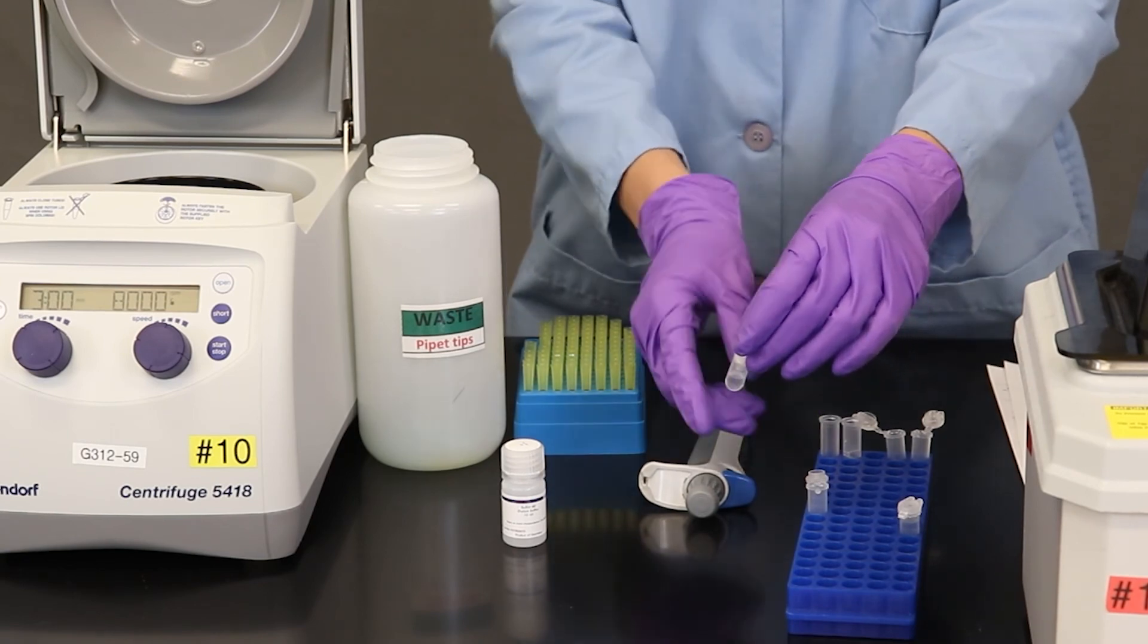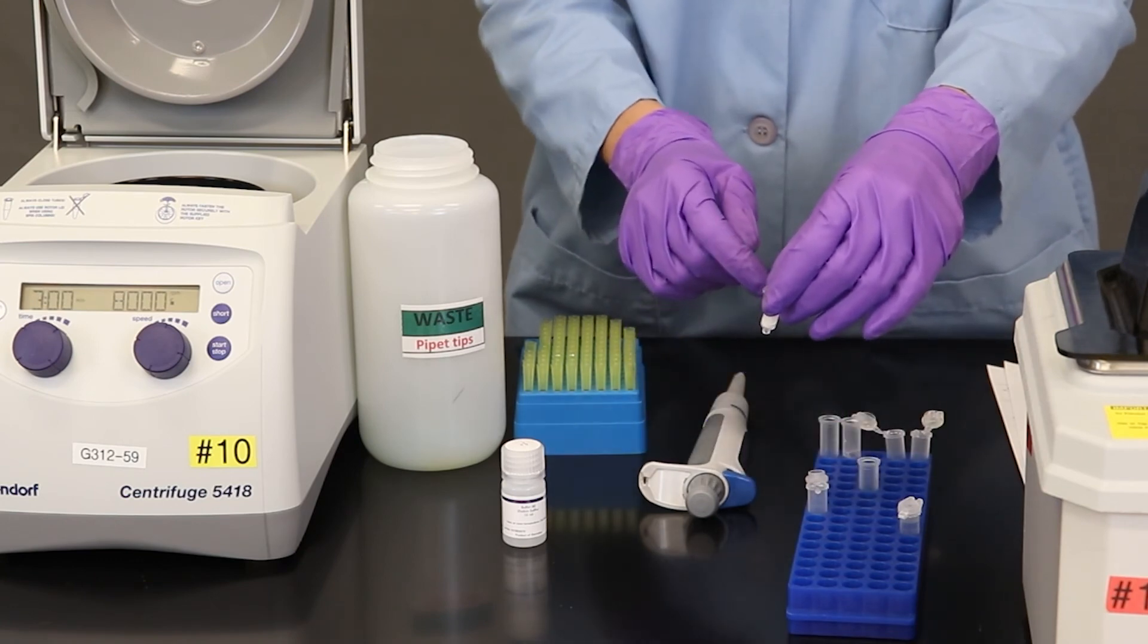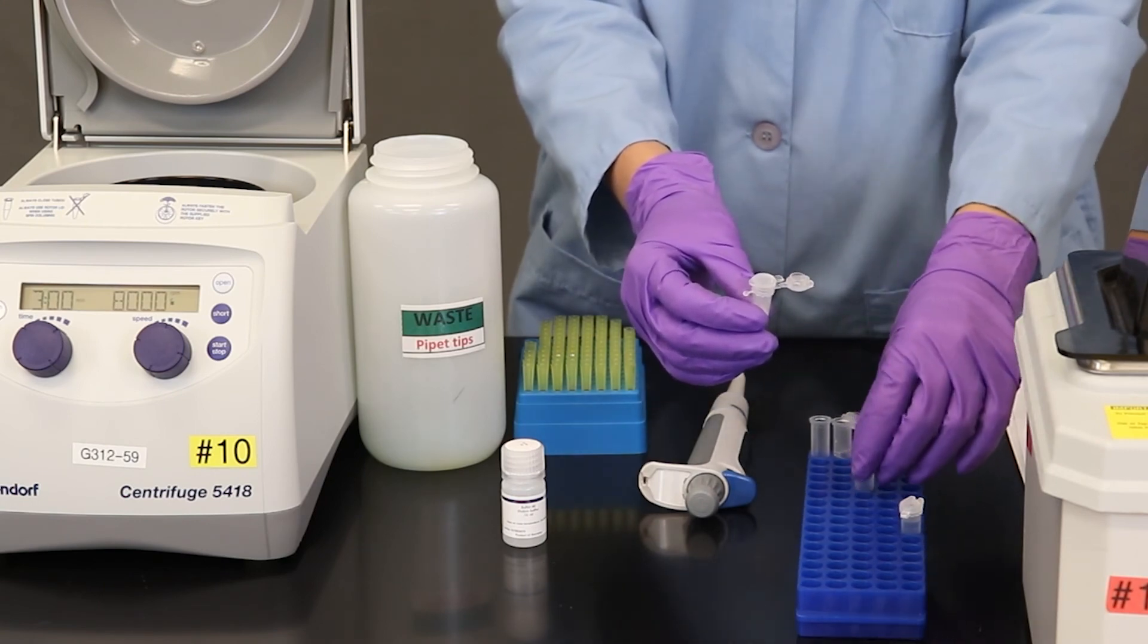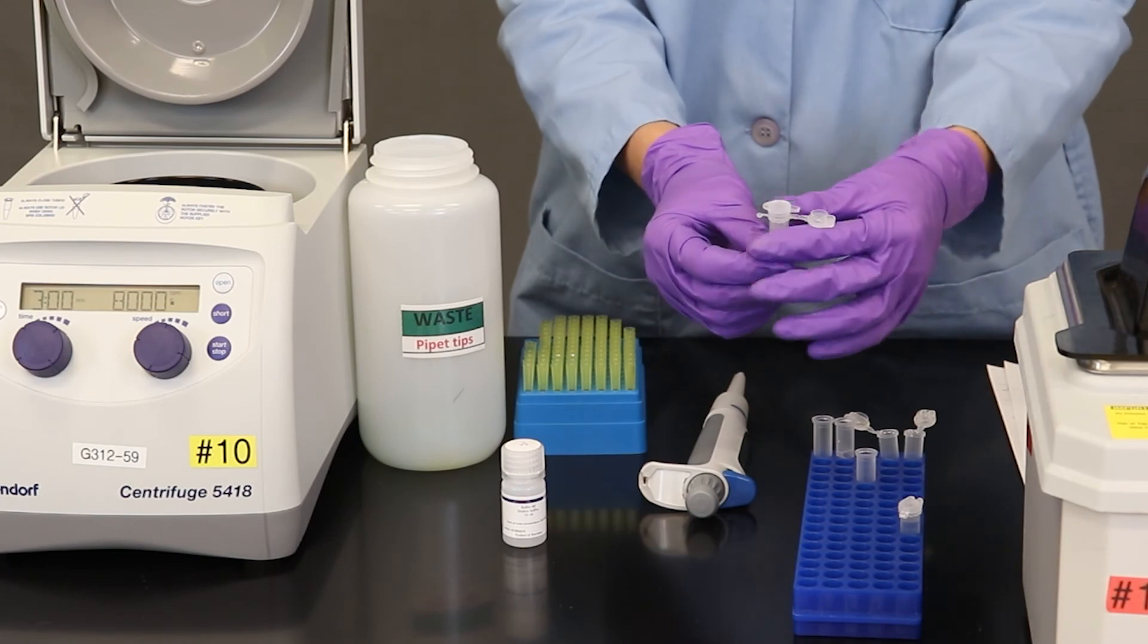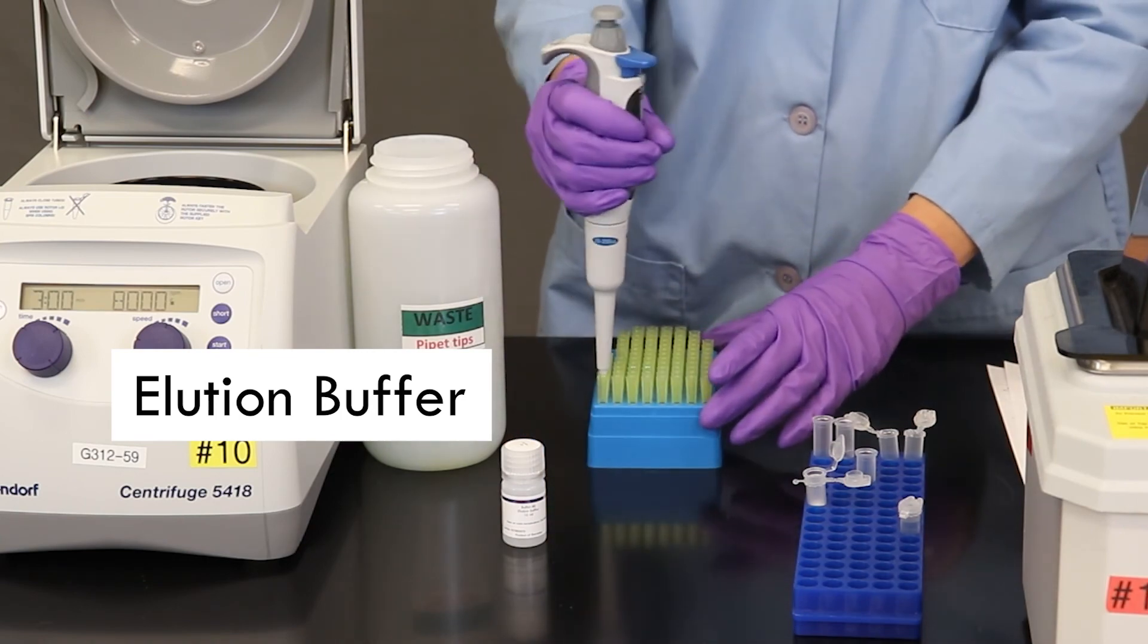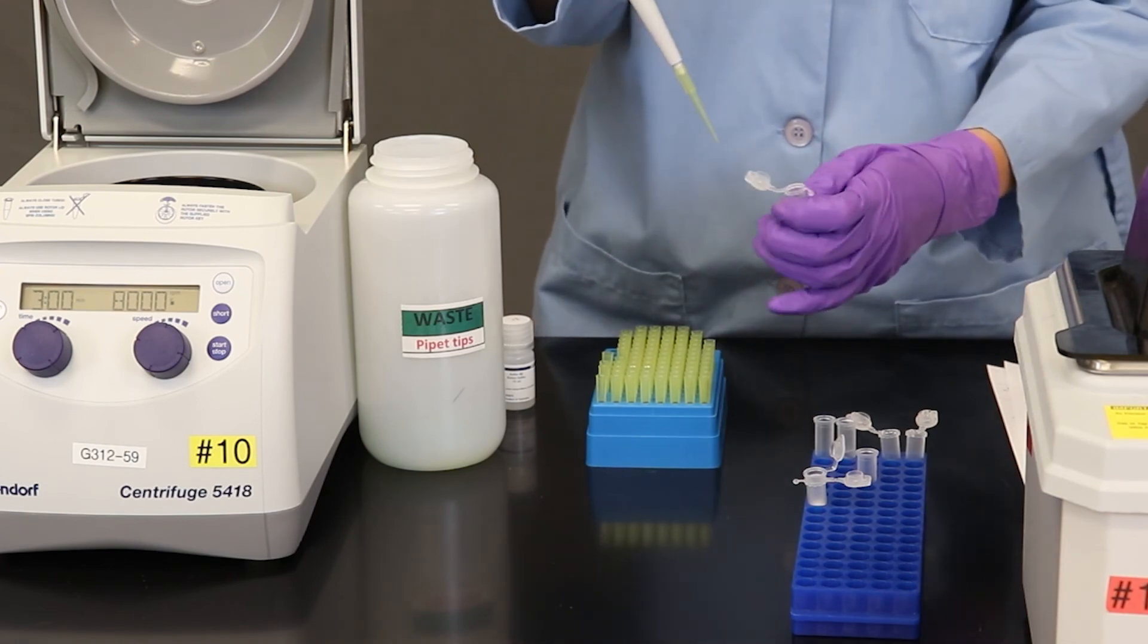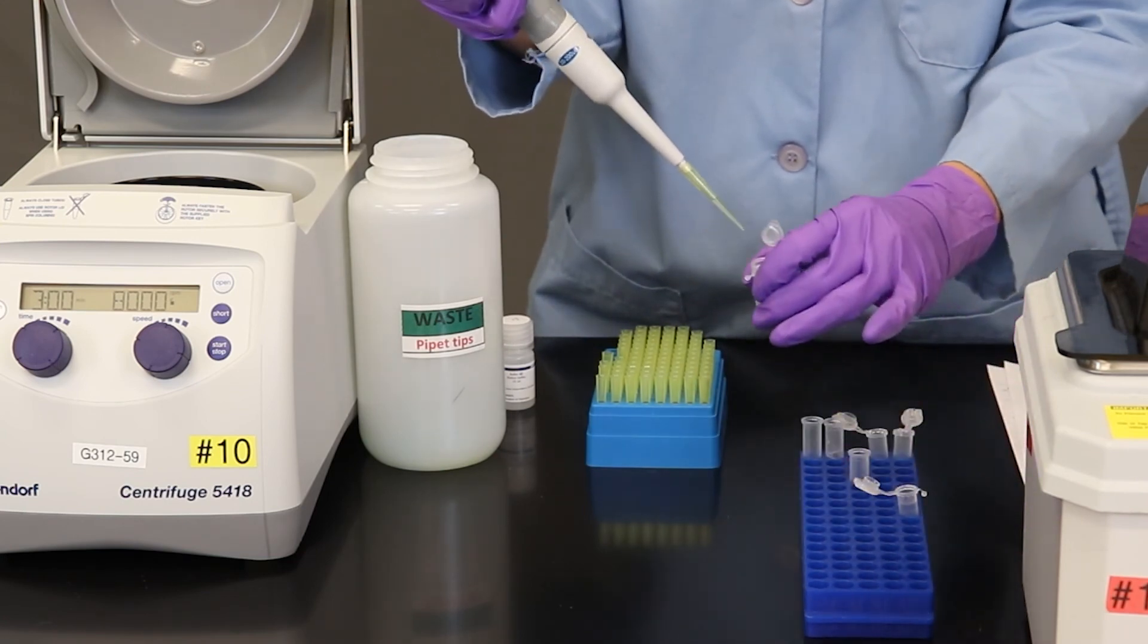So now we have the mini column and it is purified and the DNA is still in the column. The next step we're going to do is to elute or get the DNA out of the column. So I'm going to take off the previous tube and instead of putting it in one of these collection tubes, I'm going to put it in a regular microfuge tube where I can store my sample. So I'm going to put 60 microliters of this elution buffer. And I'll pipette that in and then I will put it into the centrifuge.